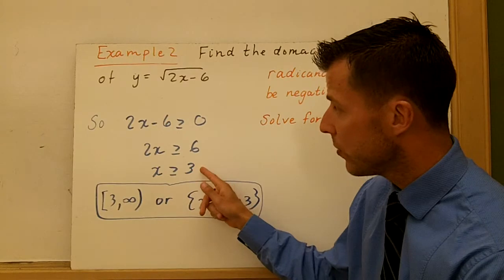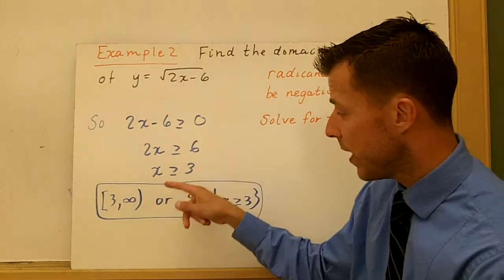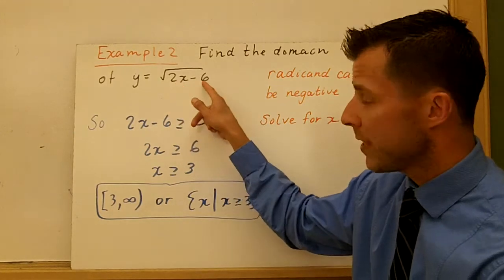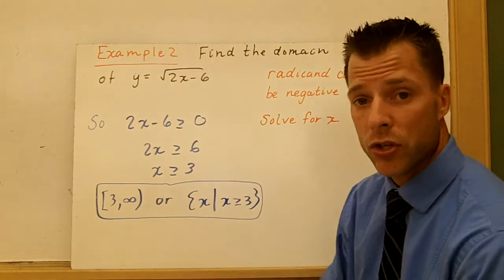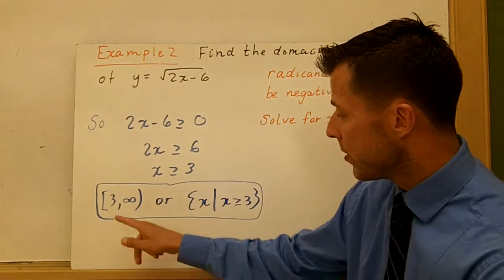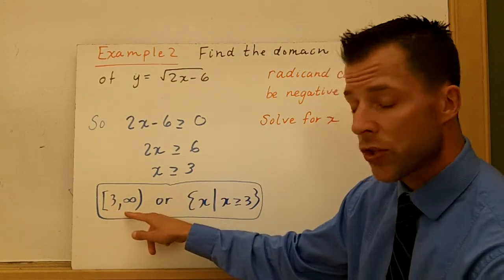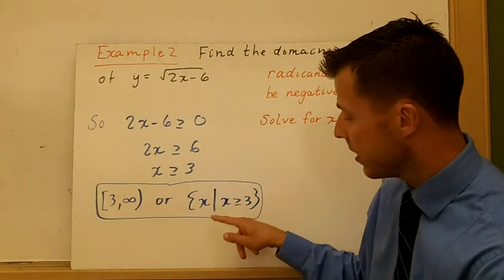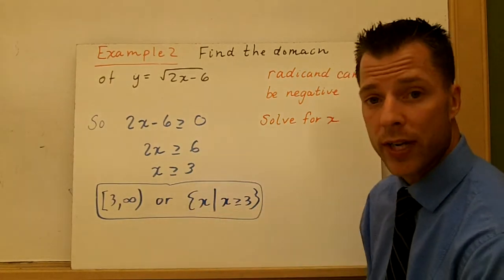x has to be greater than or equal to 3 for that to be true. So if I use 2, 2 won't work because 4 minus 6 is negative 2. There's no real solution there, no real value for the domain. So we can include 3, and it's 3 to infinity work. Or we can write this in set builder notation as x such that x is greater than or equal to 3.